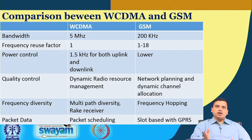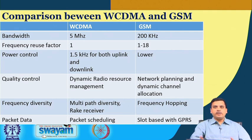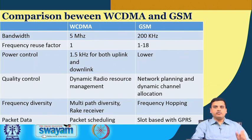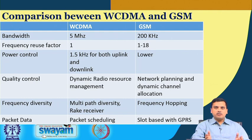Different algorithms can run while combining signals over different bands. For packet data, packet scheduling is already a part of WCDMA, whereas in the previous GSM system it was slot-based GPRS. When data was supported in GSM, GPRS and EDGE came in — you could accumulate larger numbers of slots dynamically and allocate to users, thereby providing a variable data rate.